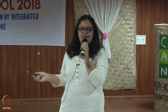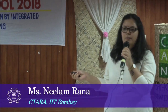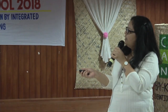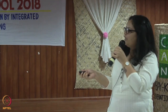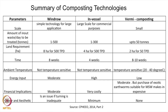This is a summary of composting technologies — it explains what scale is appropriate for each technology. Windrow and in-vessel composting are suitable for large-scale biodegradable waste, while vermicomposting is for smaller scale. However, vermicomposting is temperature-sensitive and requires expertise.